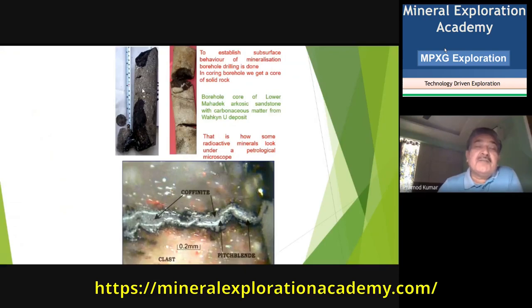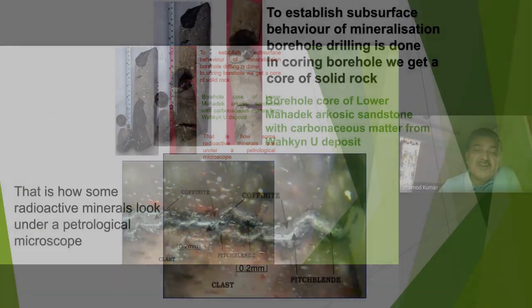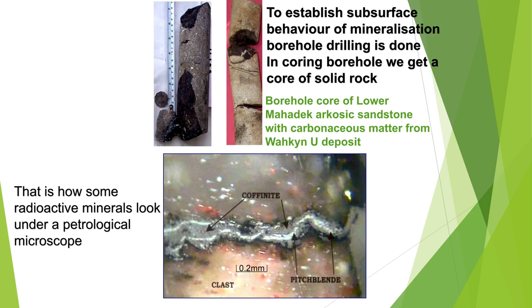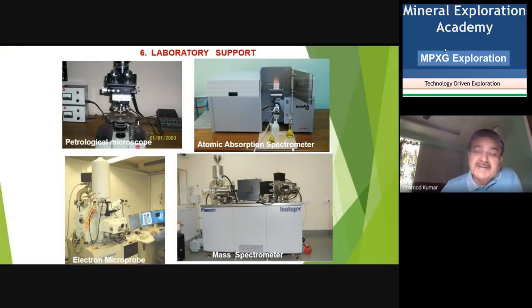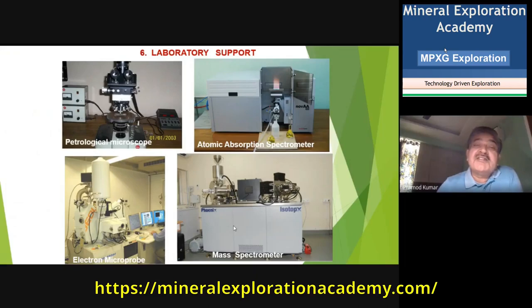The uranium presence is also confirmed in the laboratory. The petrological thin section of the core shows how coffinite is present in the petrographic slide. From all methods — gamma-ray logging, beta-gamma logging, and petrological examination — we confirm the presence of uranium. Chemistry tests are also carried out in petrological laboratories and chemistry labs using AAS (atomic absorption spectrometry), electron microprobe, or other instruments to confirm the presence of uranium.